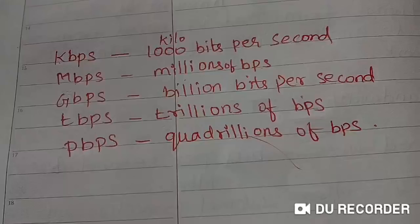Gbps means gigabits per second, or billions of bits per second. Tbps means terabits per second, or trillions of bits per second. Pbps means petabits per second, or quadrillions of bits per second.